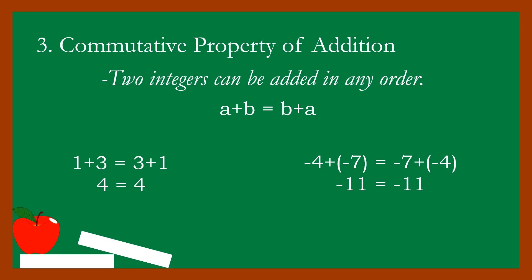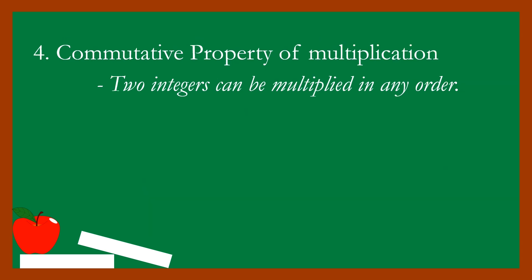Even when the arrangement of the two integers is reversed, the result is still the same. Property number four: the commutative property of multiplication. Two integers can be multiplied in any order. The notation is a times b is equal to b times a — when we multiply two integers, even if the order is reversed, the result is the same.